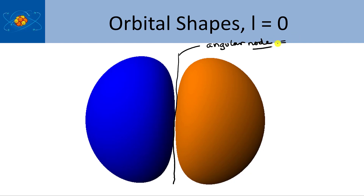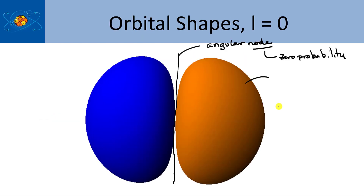Here's the shape we were looking at. The angular node in the middle is where the probability goes to zero, and this is what creates the shape of the orbital. Any node means zero probability — there's no chance you could find the electron there. The portions separated by the angular node in the p orbital are called lobes.